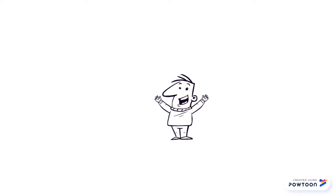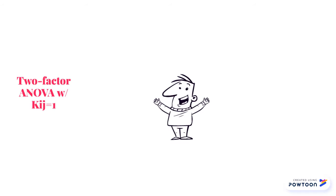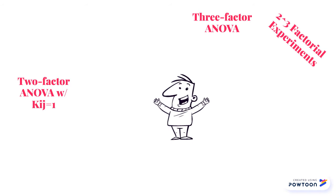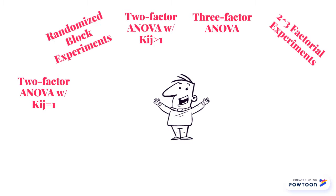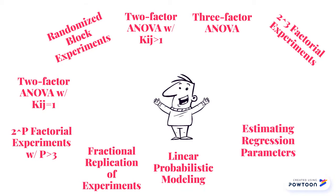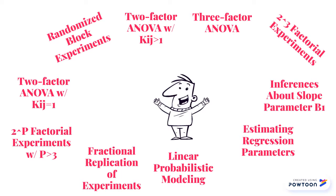Latin square design is one of many tools in statistics. This tool is used when it's decided to control — like in an experiment, you will see the result effects that the experiment is having and some effects that you did not figure out by yourself. What Latin square design does is put everything in order to see which results are the best.